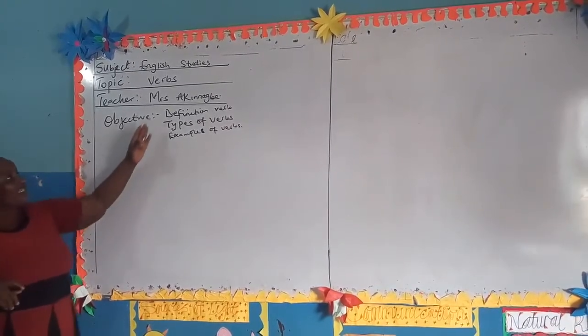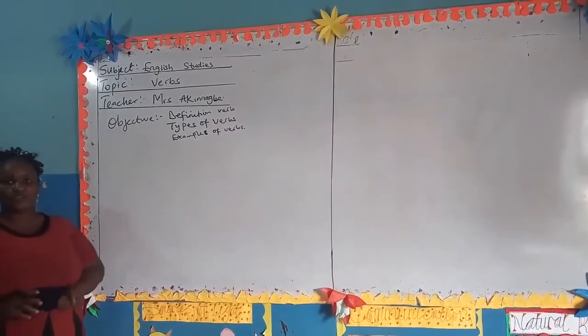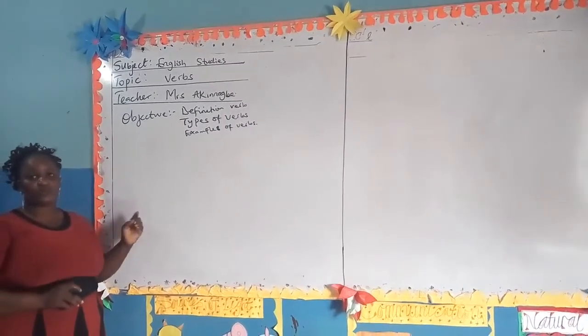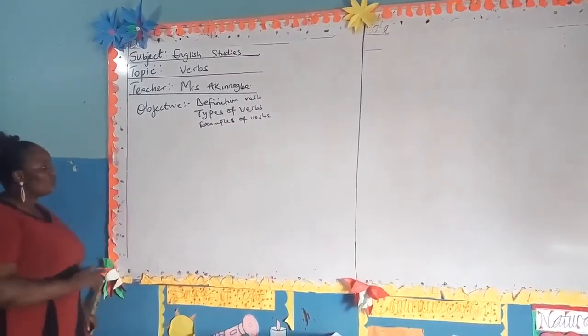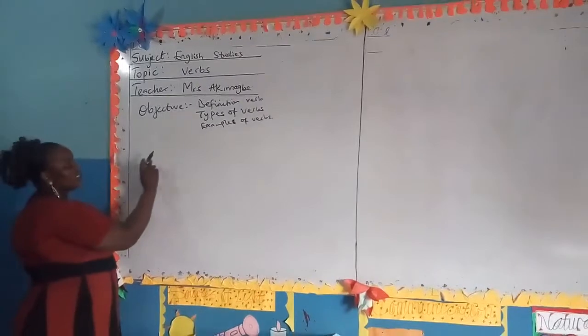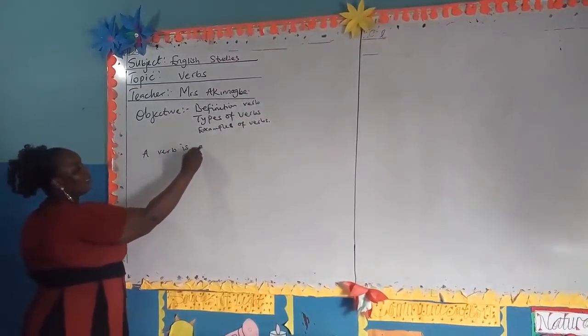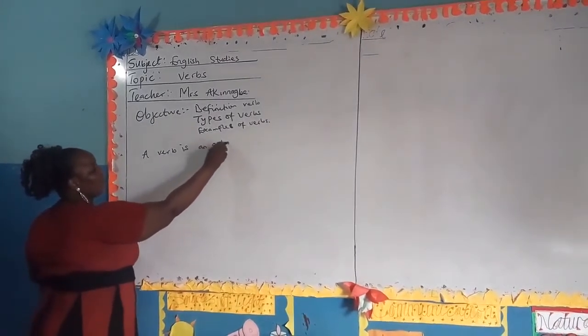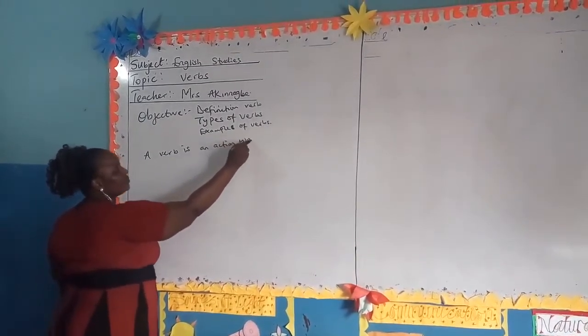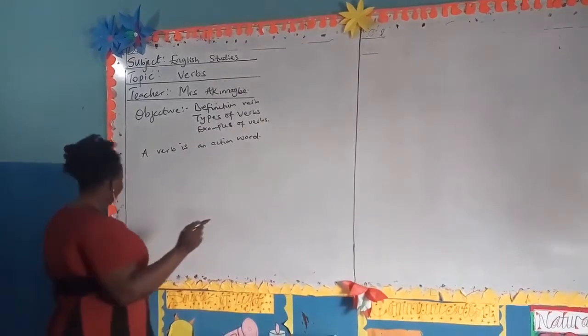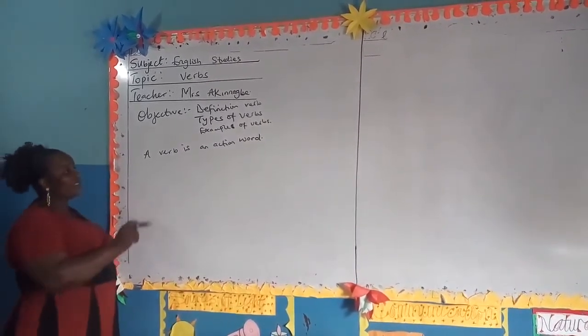So we are going to be looking at these three stages for now. These three objectives is what will be our guideline. So first and foremost, what is a verb? A verb is an action word, an action word.